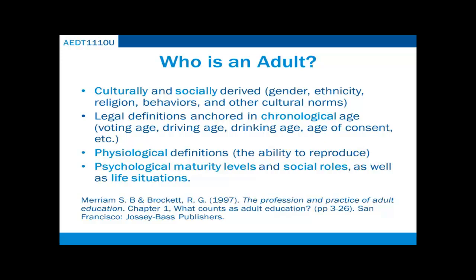There are also legal definitions of adulthood, which are generally anchored in chronological age, such as the voting age, drinking age, age of consent, etc. There is a wide variation among governments in these definitions. Take for example, the drinking age in Canada versus the US.